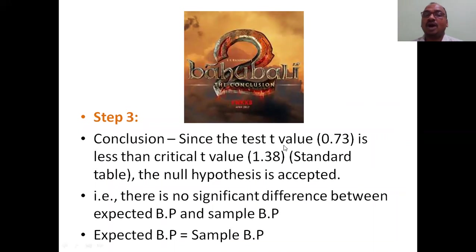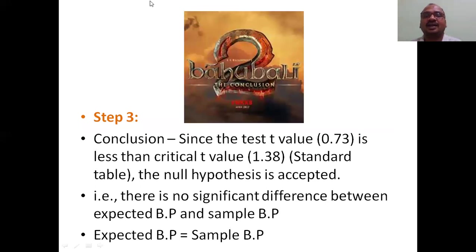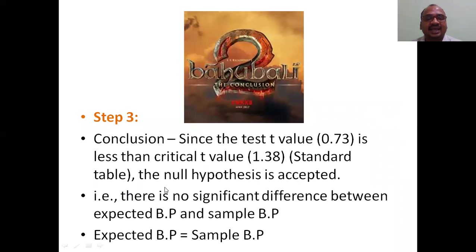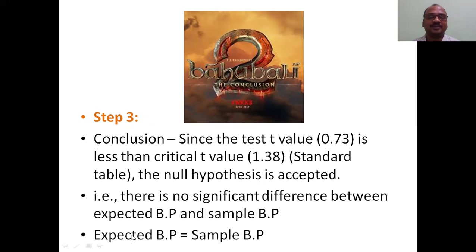Now the conclusion: since the obtained t-value of 0.73 is less than the critical t-value of 1.38, the null hypothesis is accepted. Since it is less, there is no significant difference between the expected BP of 15 and the sample BP.